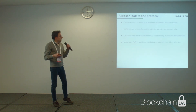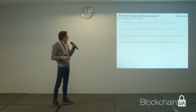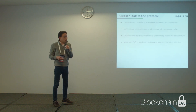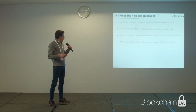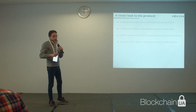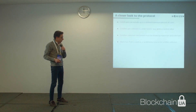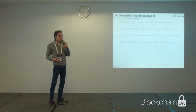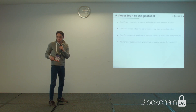Looking more closely at the protocol: certificates are going to include a maximum amount of coins, and certifiers must be selected in a deterministic way given a random value. Such a mechanism must be known by both main chain and sidechain. We are going to use main chain proof of work as the randomness source.